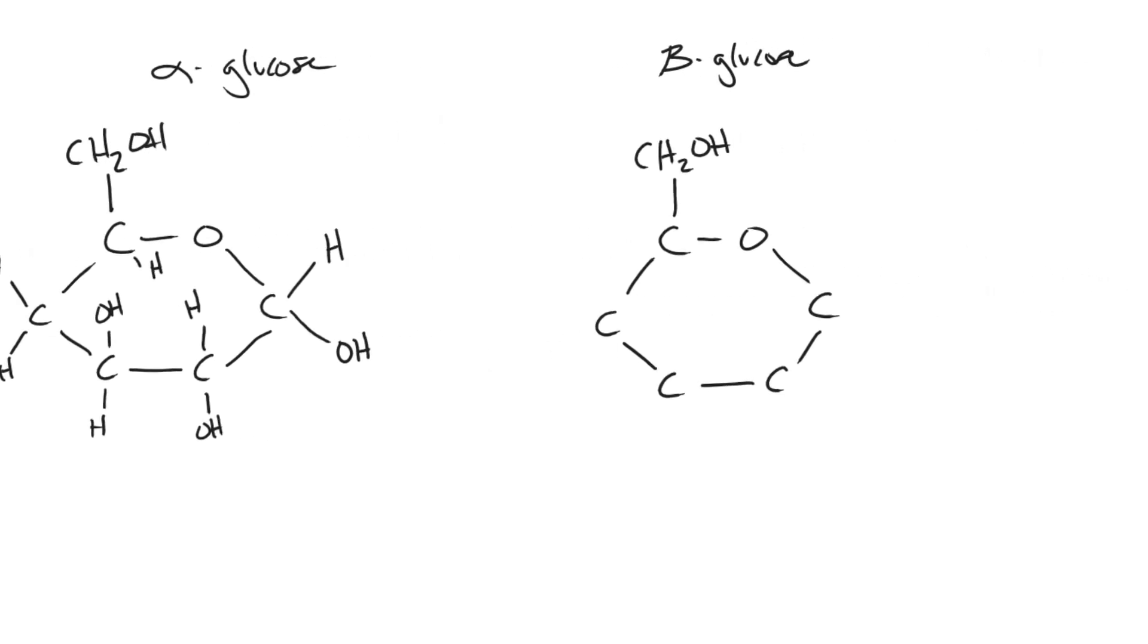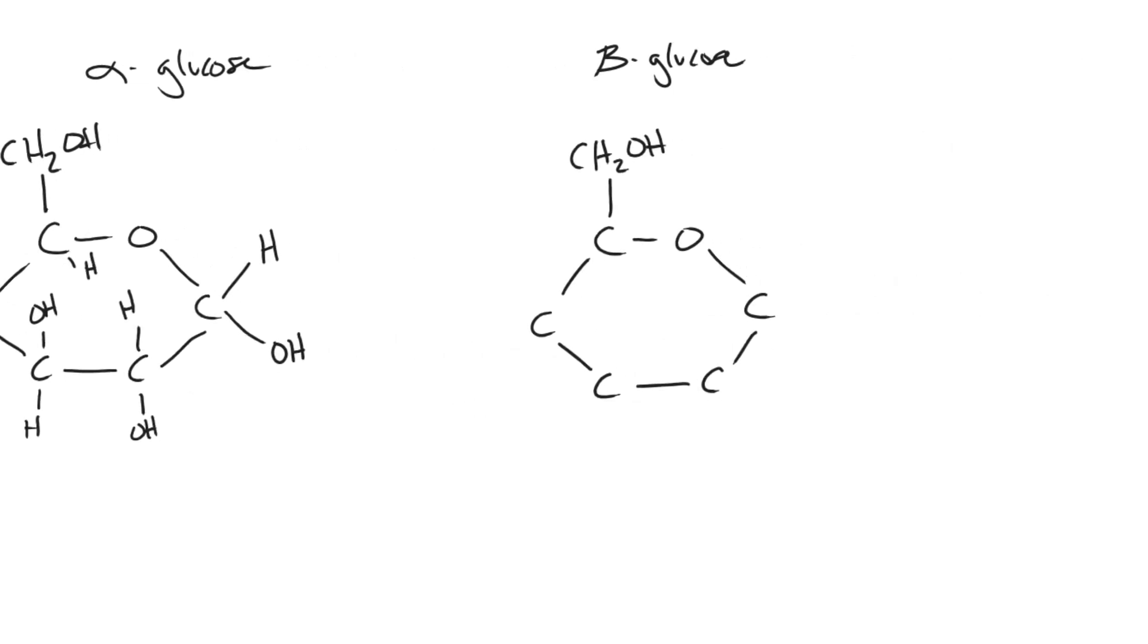Now if we go over to beta glucose, you'll notice that again this is identical to the way we started our alpha glucose, but this first carbon is going to have the hydroxide and the hydrogen switched, and everything else is going to be identical. So we have hydrogen on top, OH on bottom, OH on top, H on bottom, H on top, OH on bottom, and our hydrogen on the bottom.